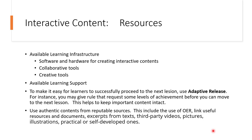Now looking at resources for interactive content — we have analyzed student learning needs, and now we look at resources. What resources are required? Available learning infrastructure is very important. The type of infrastructure you have will determine how powerfully you can create interactive content. For example, if you don't have the right tool to create branching, you won't achieve individualized learning. You need software and hardware for creating interactive content, unique collaborative tools, and unique creative tools. Also consider using adaptive release to help learners quickly proceed to the next lesson.